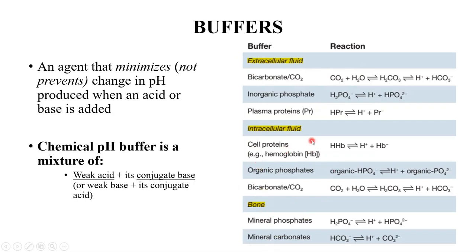In the extracellular fluid, the most abundant buffer system is the bicarbonate–carbon dioxide buffer system. Carbon dioxide reacts with water to form carbonic acid, which then dissociates into hydrogen ions and bicarbonate. In reverse, when hydrogen ions are produced, bicarbonate ions combine with them to form carbonic acid — a weak acid — which easily dissociates back into carbon dioxide and water. Carbonic anhydrase is the enzyme that does this, and the hydrogen is effectively packaged inside water with no further consequence to pH.